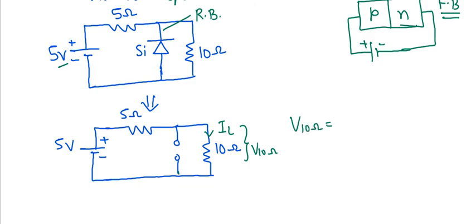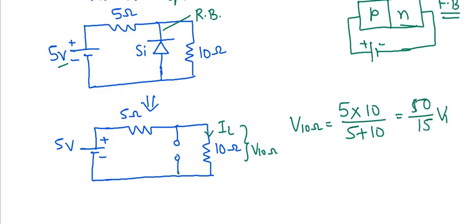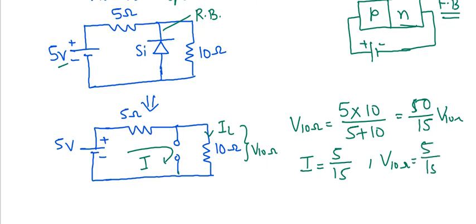To find the voltage across the 10 ohm resistance using voltage division: V = 5 × 10 / (5 + 10) = 50/15 volts. We can also use KVL: the current is 5/15, and the voltage across 10 ohms is (5/15) × 10 = 50/15 volts. Similarly, the voltage drop across the other resistance can be obtained using the same current value.